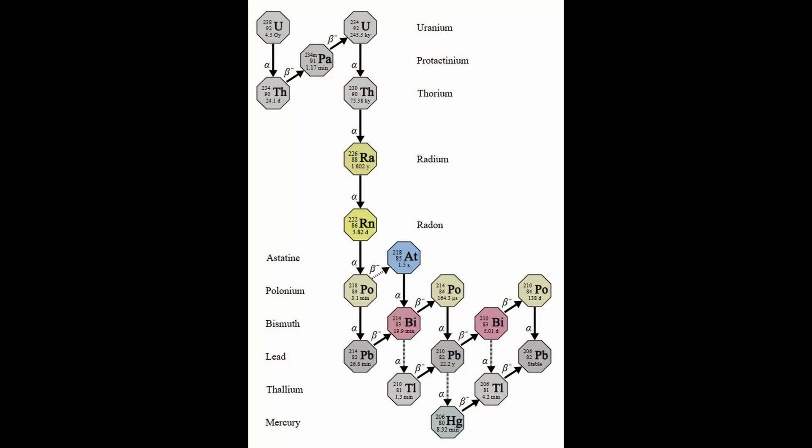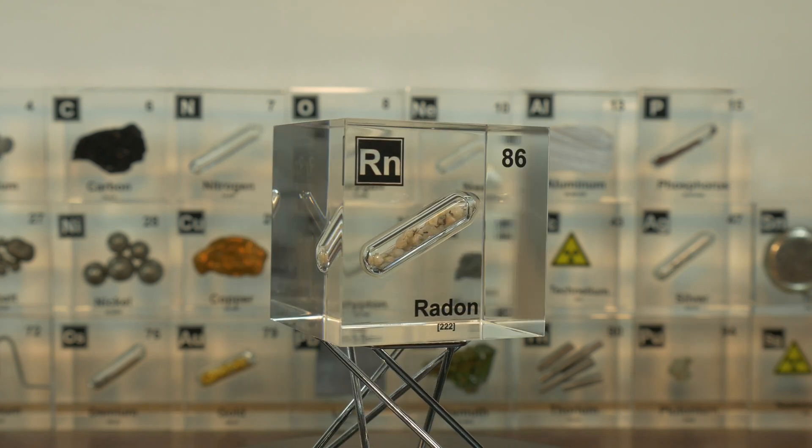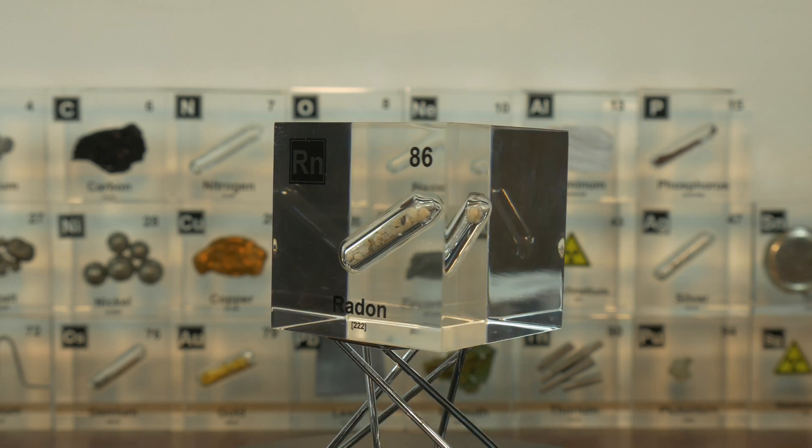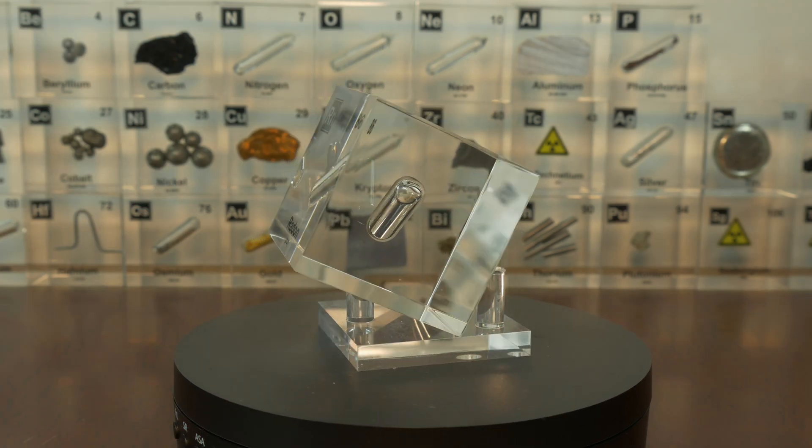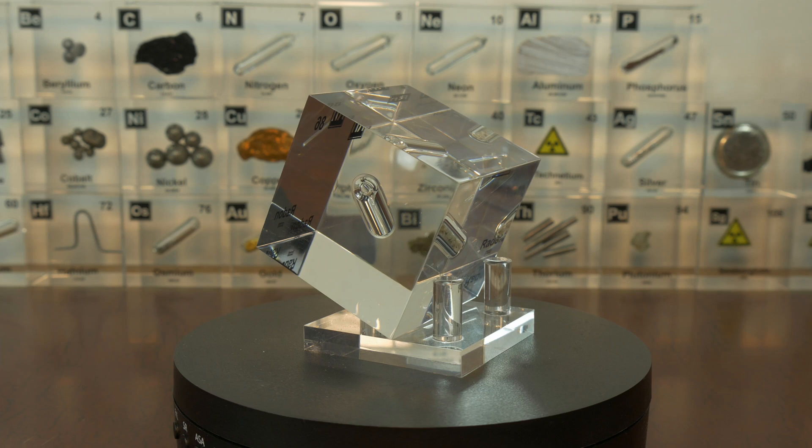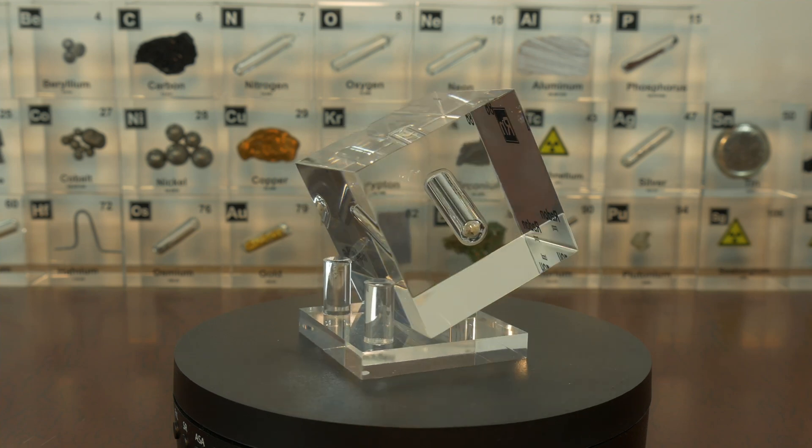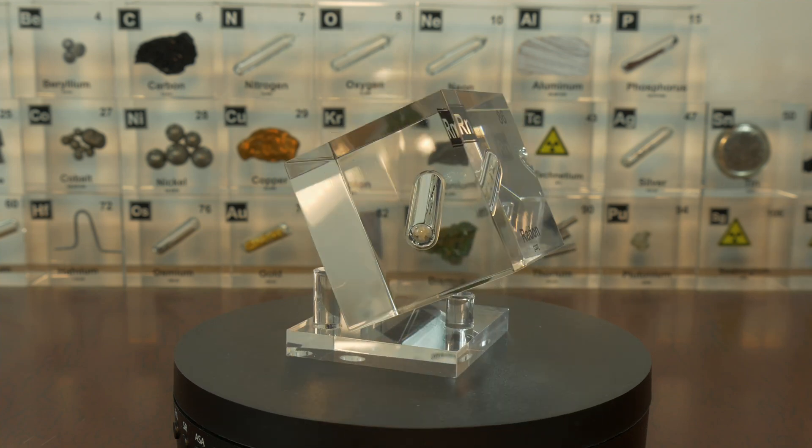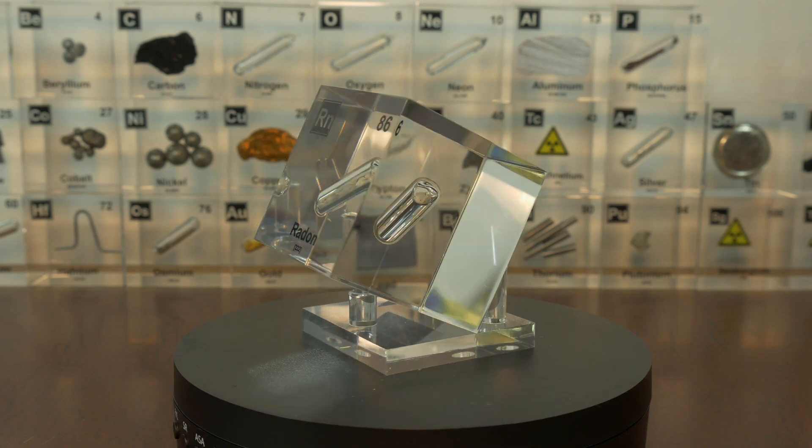Now the name radon originates from its association with radium, the element from which it was observed as a decay product. Early on, scientists referred to the gas as radium emanation because it was released during radioactive decay of radium. Now in 1918, the term radon began to gain traction to describe this gas specifically. It was derived from combining radium with the 'on' suffix, which is commonly used for noble gases, aligning it with elements like neon, argon, and krypton. Now before radon was universally adopted, the gas was also briefly called niton from the Latin word nitens meaning shining, a nod to its phosphorescent properties when it solidifies. However, in 1923, the International Union of Pure and Applied Chemistry officially standardized the name as radon to eliminate confusion and to reflect its close connection to radium in the decay chain.